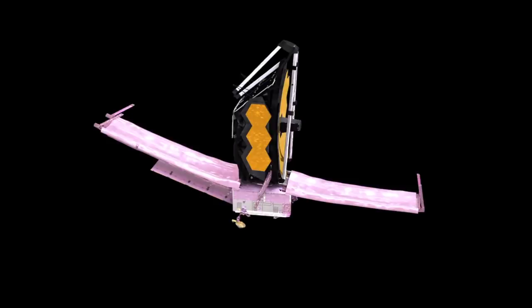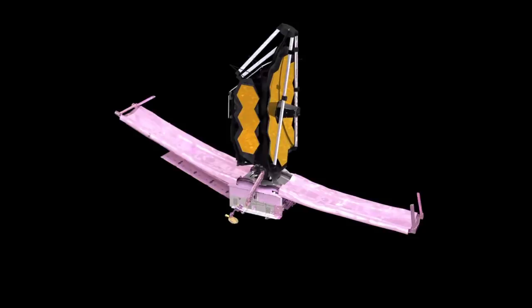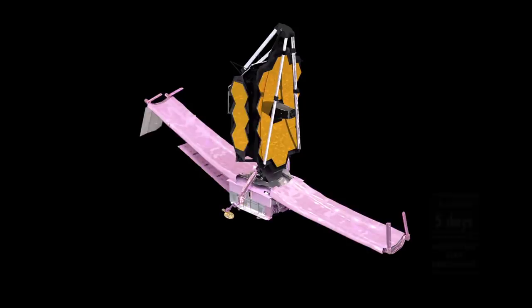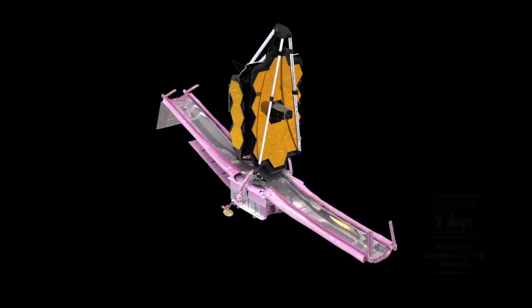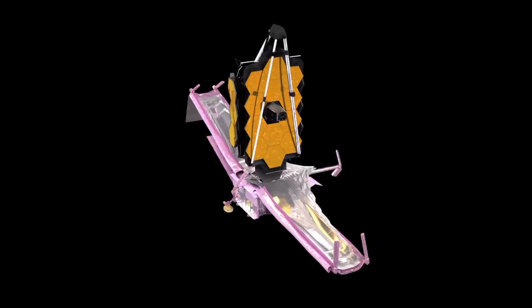To recap, the launch was basically perfect. The venerable Ariane 5 rocket that lofted JWST into space performed about as well as it realistically could have, preserving its unusually solid track record for accurate launches and saving the JWST a good deal of fuel for its primary mission.